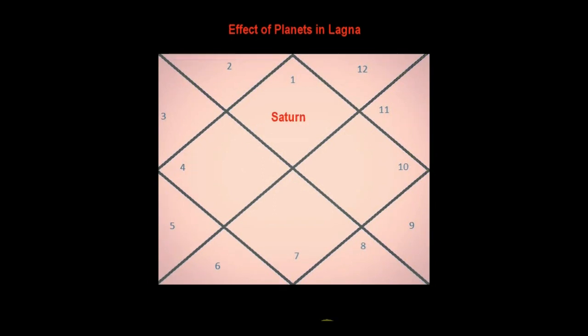A person with Saturn in lagna will have a wise and old look, sharp features, and a strong physique. These people are generally tall and lean and all their actions are slow, well contemplated, and lazy. Actions would generally be pre-meditated and not done in a hurry. They would generally give one a dirty look.